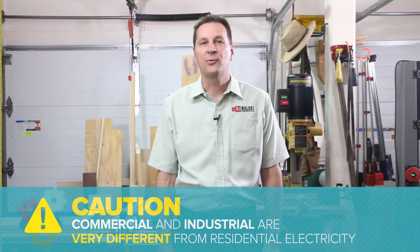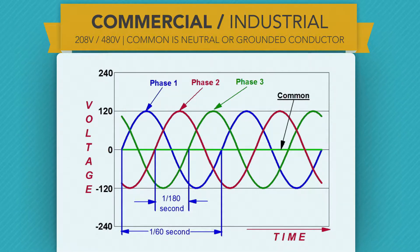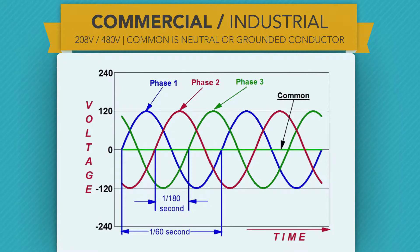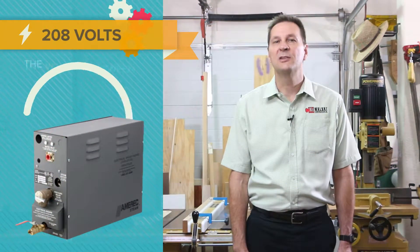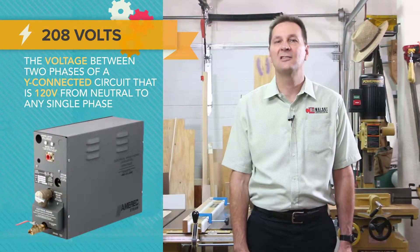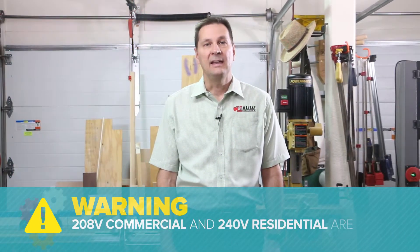On three-phase four-wire Y-connected systems, you can see that an entire cycle of the voltage wave — starting at zero, going all the way positive, then back through zero, then all the way negative, and back to zero again — is still taking one-sixtieth of a second for each of the three phases. 208 volts is the voltage between two phases of a Y-connected circuit, that is 120 volts from neutral to any single phase.